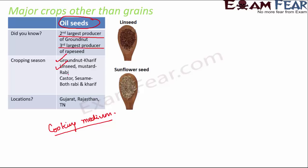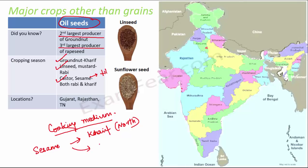Castor and sesame are both rabi and kharif. Sesame, also known as til, is a kharif crop in northern India but a rabi crop in southern India — demonstrating how the same crop can differ by region. Location-wise, oil seeds are grown in Rajasthan, Gujarat, Tamil Nadu, and a few other states.